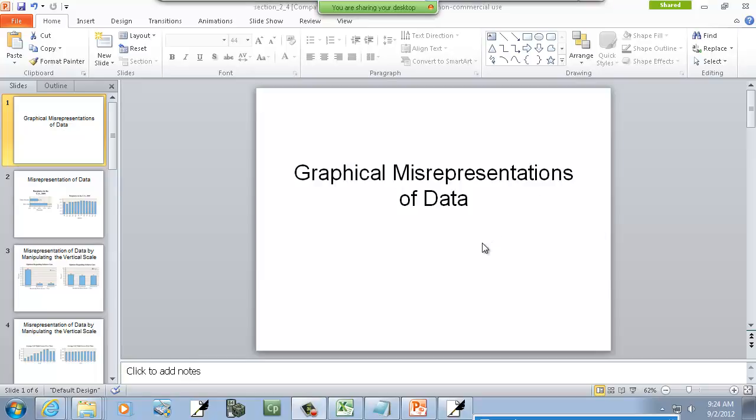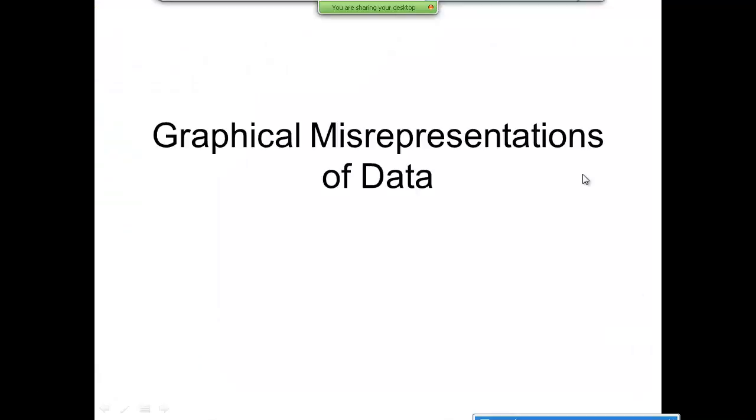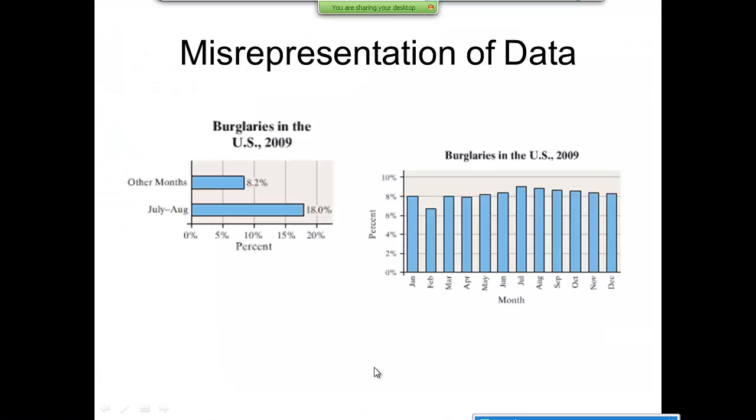This is graphical misrepresentations of data. The first one shows burglaries in the US for 2009 and indicates that from July to August that was 18% of your data, and then other months is 8.2%. What that's not really indicating to you is that it does not mean the other months total adds up to 8.2 percent.